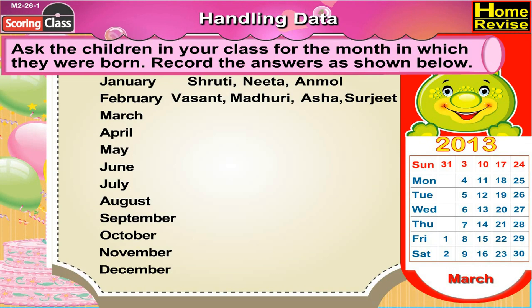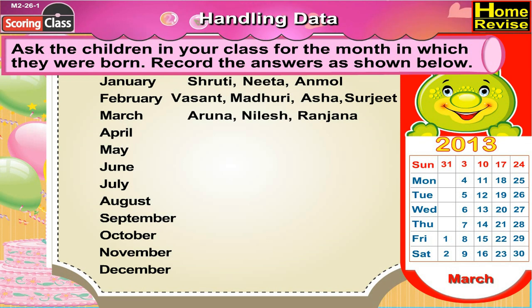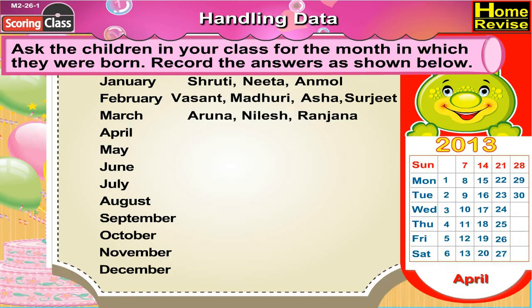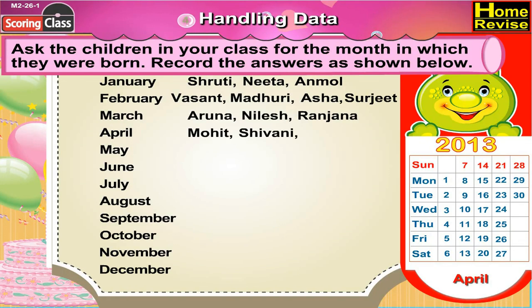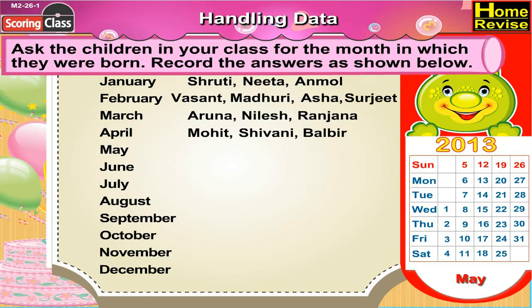In March, Aruna, Nilesh and Granjana were born. In April, Mohit, Shivani and Balbir were born in the month of April.